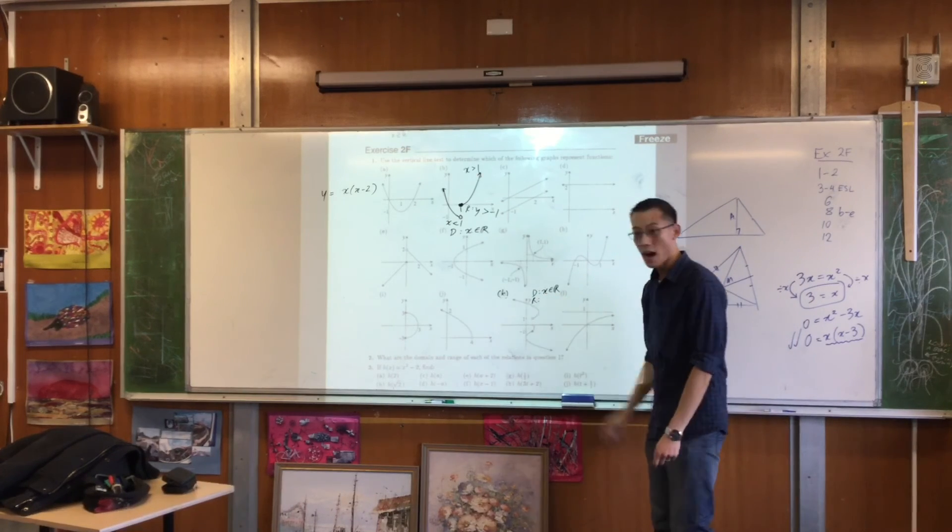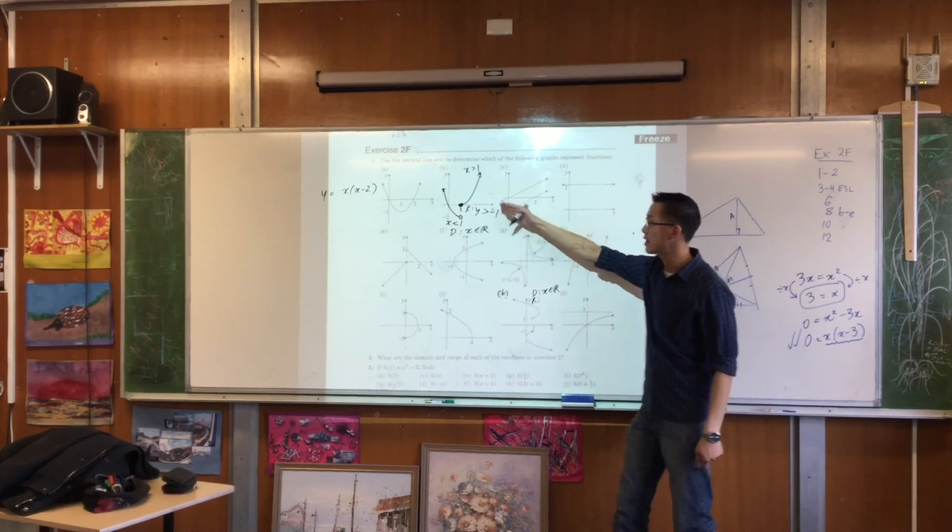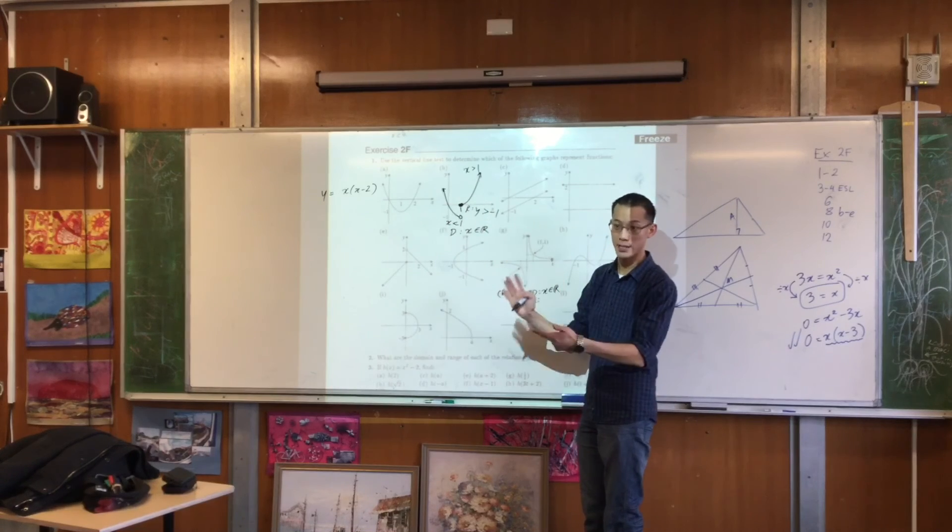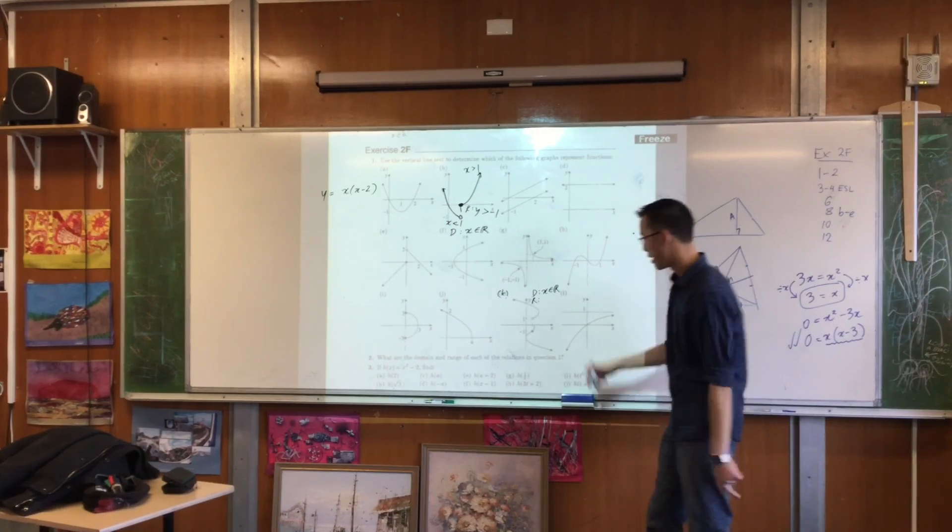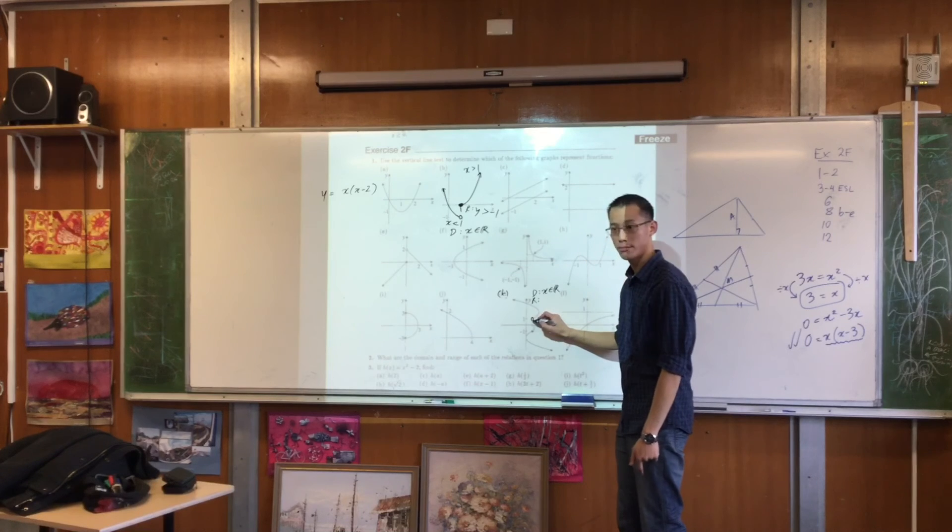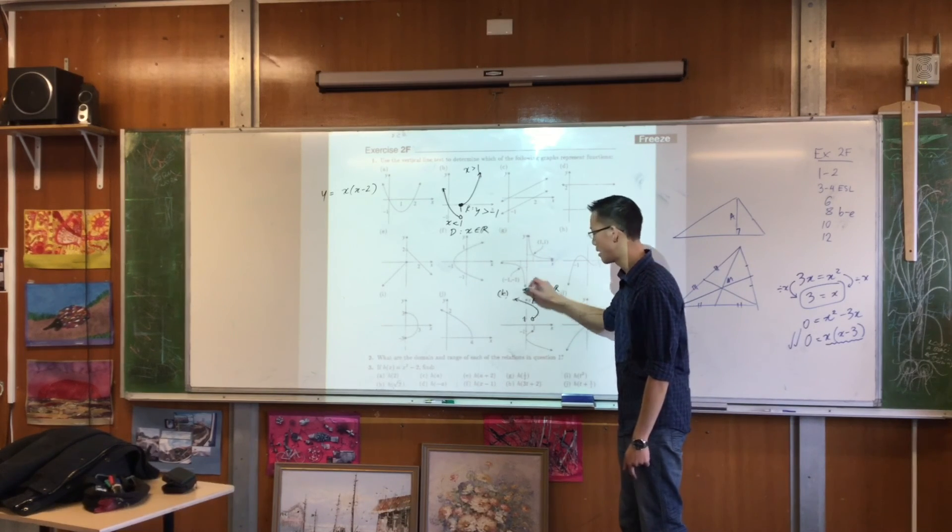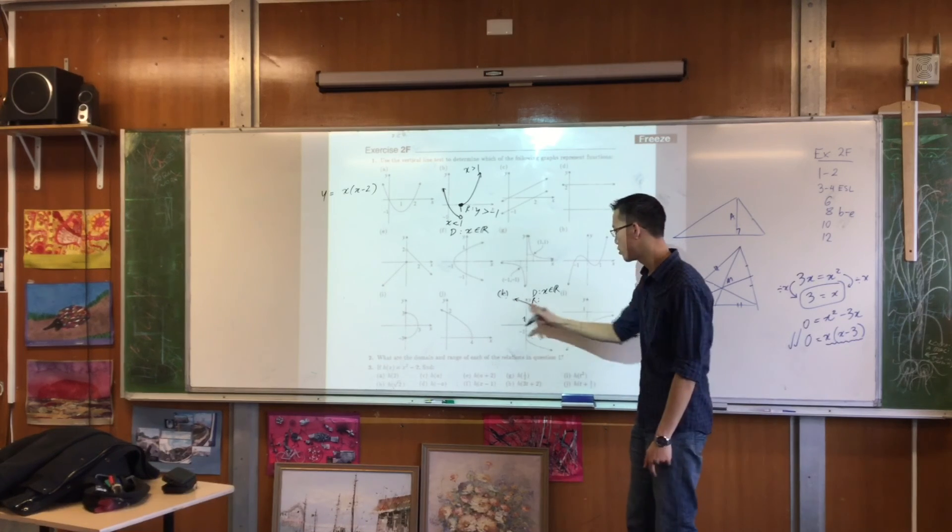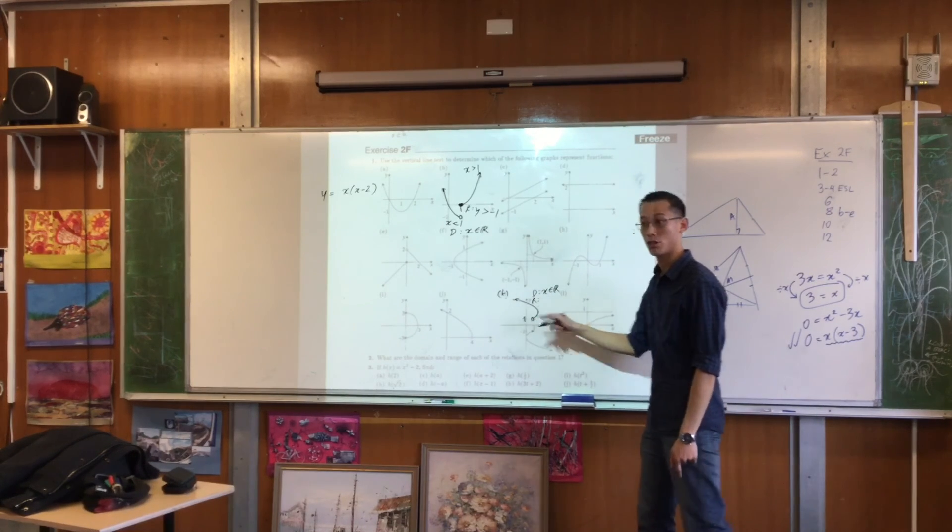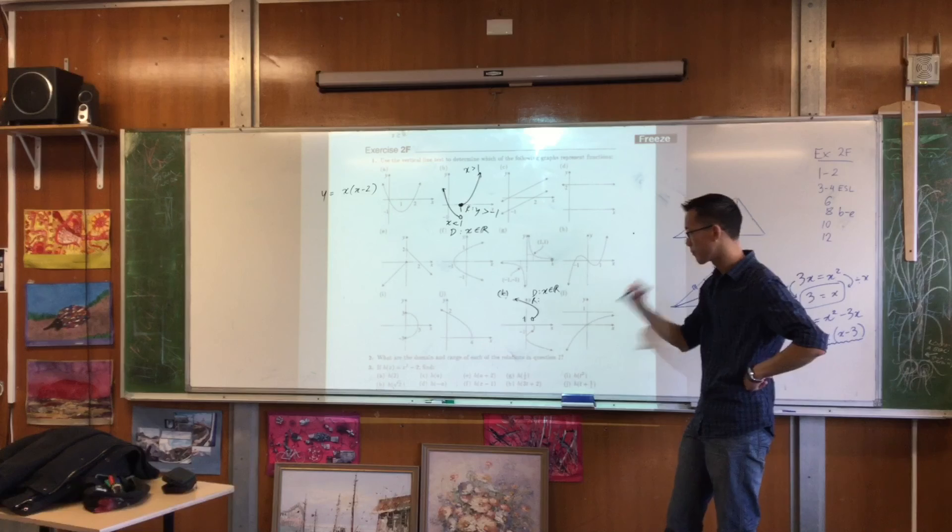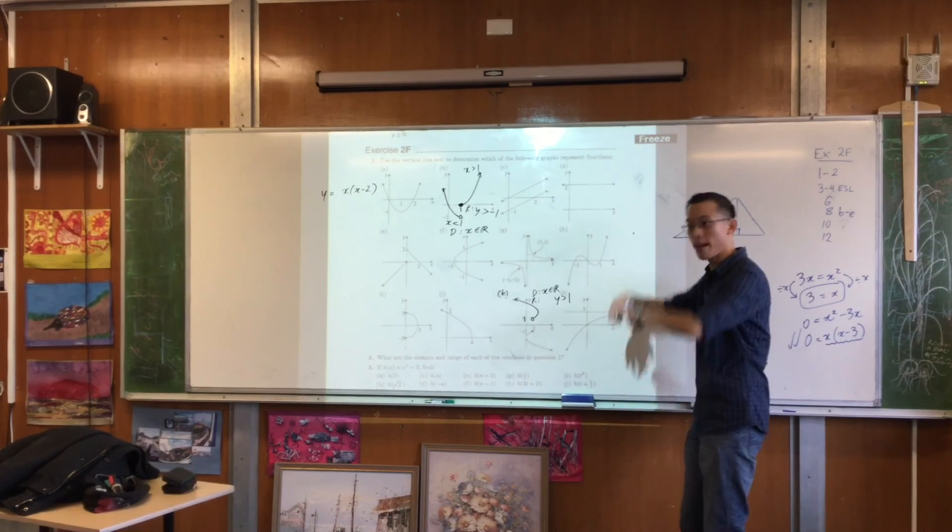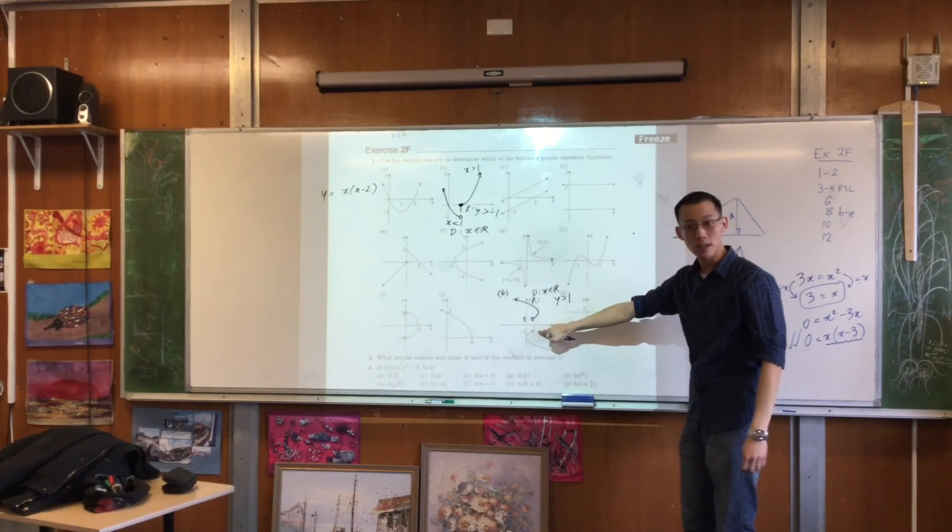When you think about range, it's a little trickier. I'm going to do just like I did before - I'm going to think about each of the branches, the pieces, just one step at a time. Let's have a look at the top part. There's a hollow circle. The value there is one, and then it just goes up and it never stops. So how would you express this range? Y is greater than one.